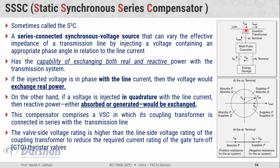The valve side voltage rating is higher than the line side voltage rating of the coupling transformer to reduce the required current rating of the gate turn-off thyristor valves. There are two windings of this coupling transformer — the primary winding is in series with the line, and the secondary winding is where the multi-pulse converter and the energy storage devices are connected. The voltage rating on the secondary side is kept higher to keep the current in that branch at minimum magnitude, so that we can reduce the current ratings of the gate turn-off thyristors in the voltage source converter. It is a basic concept that on whichever side of a transformer the voltage magnitude is higher, the current magnitude would be lower.